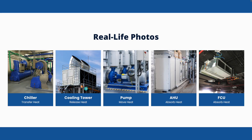Here are some real-life photos to help you understand what each component looks like. This is a water-cooled chiller. Here is a cooling tower — the large unit on the roof. Pumps are quite common. The AHU is the bigger unit, usually sitting on the floor inside a dedicated AHU room because it is large and noisy. The FCU, on the other hand, is hung above the ceiling. Essentially, AHU and FCU absorb heat; the pump moves that heat to the chiller, which transfers it to condenser water; the condenser water goes to the cooling tower to release the heat, cooling the building.